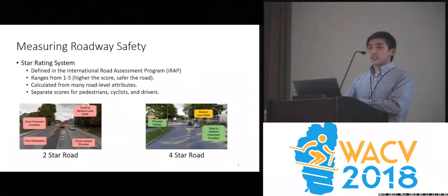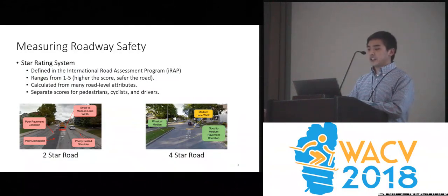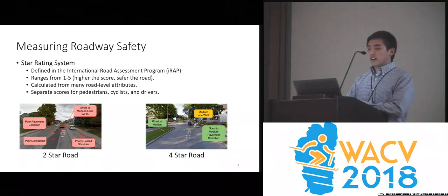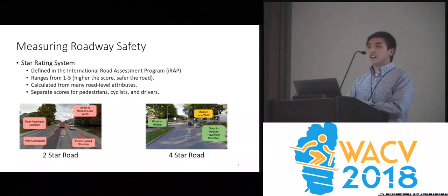To measure roadway safety, we utilize the star rating system, which is defined in the International Road Assessment Program. For any given road segment, we can obtain a star rating score ranging from 1 through 5 — the higher the score, the safer the road — and it is calculated from many road-level attributes. Separate scores can be calculated for pedestrians, cyclists, and driver safety, of which we'll be focusing on the ones for drivers for this research.